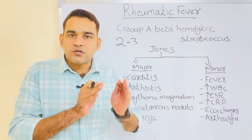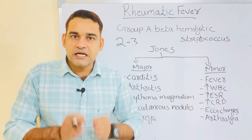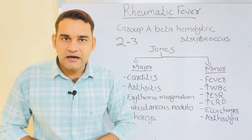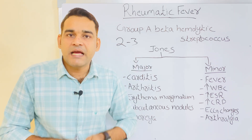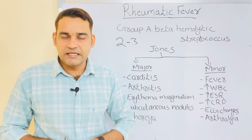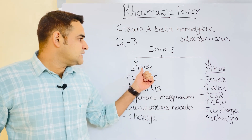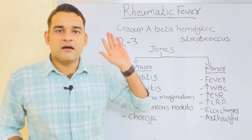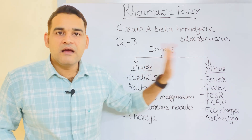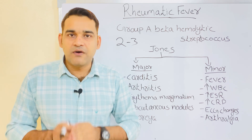To diagnose rheumatic fever, in 1944 Mr. Jones made a criteria known as Jones criteria. In this criteria, there is a major criteria and a minor criteria.